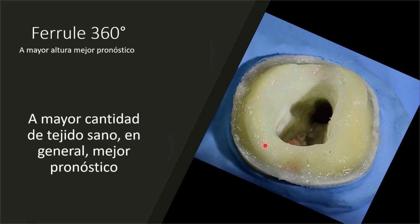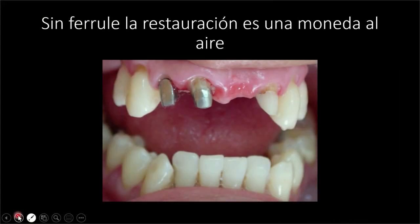El férrule ideal tiene milímetro y medio de altura todo alrededor, si no es que más. Cuidado: no porque tengas dos o dos y medio milímetros en un área sustituyes el hecho de que en alguna porción tengas solo 0.3 mm de altura. El férrule tiene que estar en toda la periferia de manera ideal. Cuando no lo tienes, todo lo que hagamos estará en duda. ¿Por qué? Porque entran en la ecuación las fuerzas oclusales.